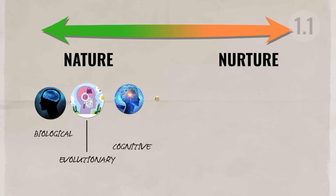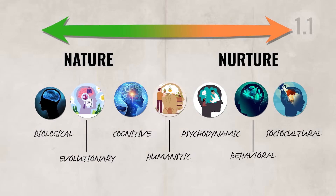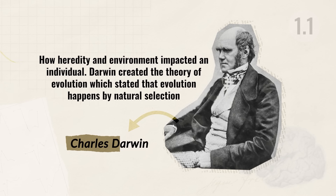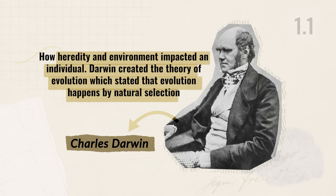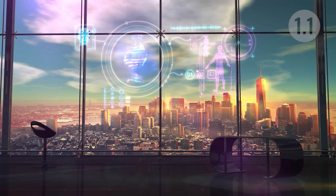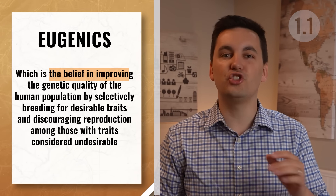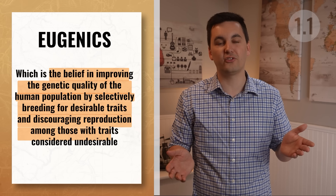Looking at heredity and environment through different psychological perspectives, we can see they stand on different sides of the debate. The evolutionary approach uses Darwin's theory of evolution as a basis and leans more toward the nature side. Darwin created the theory of evolution, which states that evolution happens by natural selection — beneficial traits survive and are passed on, while undesirable traits die off. Unfortunately, some have used this to support discriminatory practices such as eugenics, which is the belief in improving the genetic quality of the human population by selectively breeding for desirable traits.